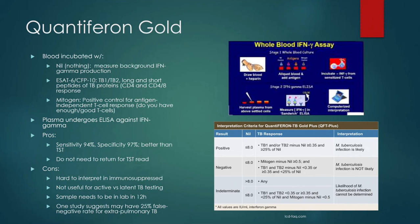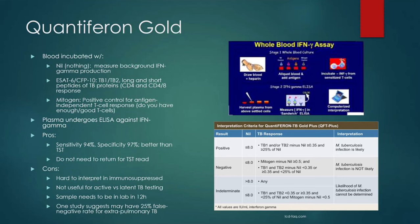After incubating those four samples for 16-24 hours, you take the plasma and run an ELISA against interferon-gamma. A positive result requires TB1 or TB2 minus the nil to be greater than 0.35 IU/mL and greater than 25% of the nil value — meaning you're producing significantly more interferon-gamma in the presence of TB peptides than at baseline. A valid negative requires the mitogen minus nil to be greater than 0.5 and TB1/TB2 minus nil to be less than 0.35.